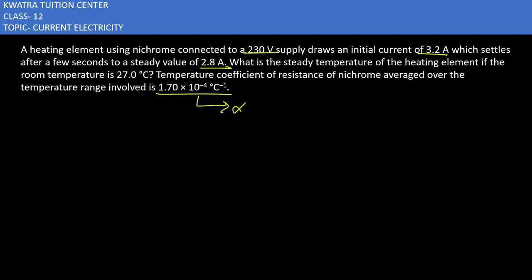Now here we have to find R1, which is 230 divided by 3.2. R is nothing but equal to V over I. We substitute and get 230 divided by 3.2, which gives 71.87 ohms. This is from the initial value.